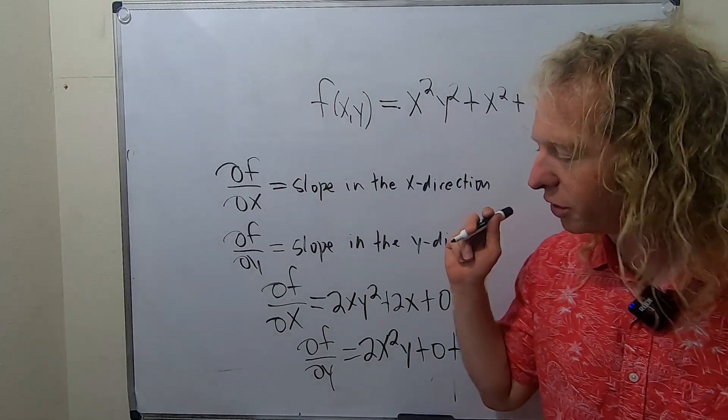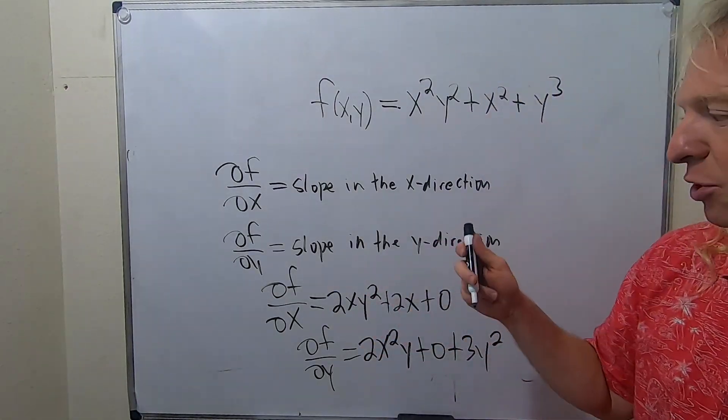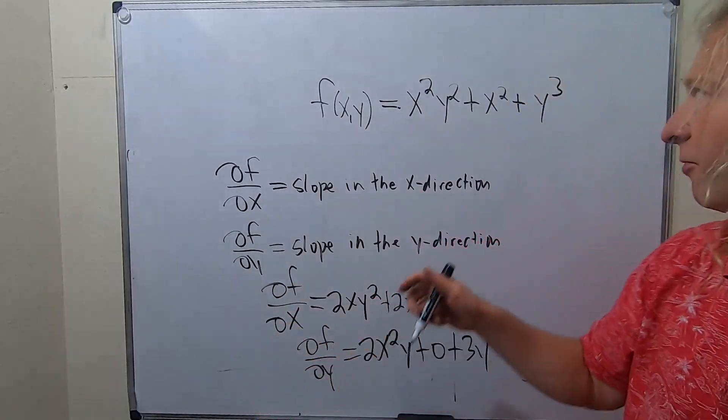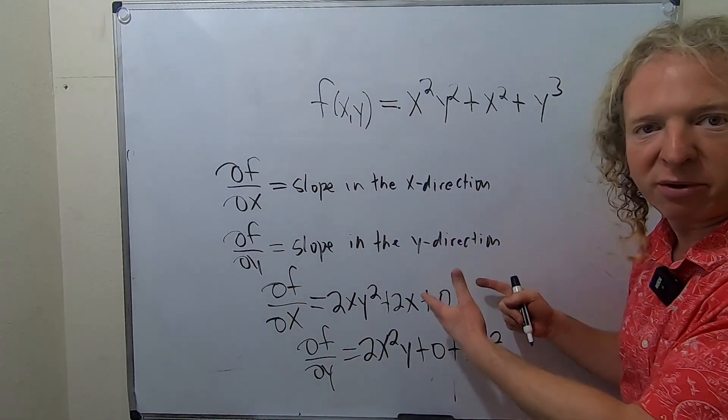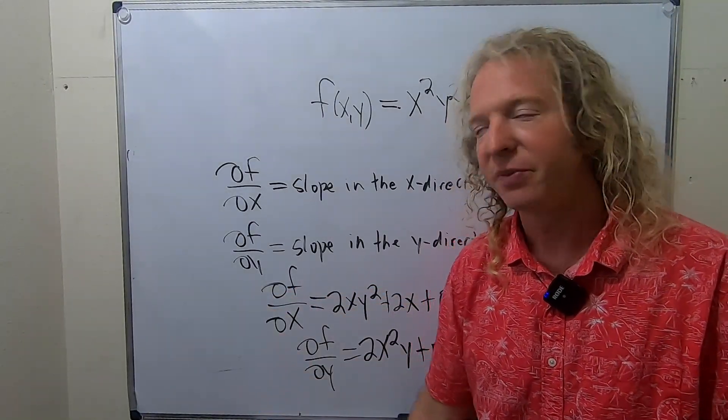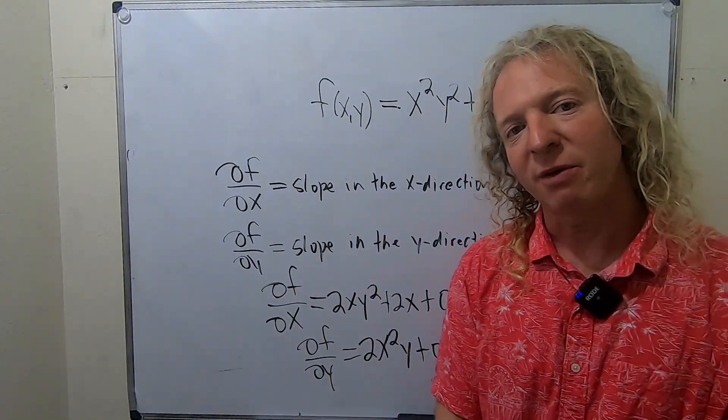So when you're taking partial derivatives with respect to any variable, you treat all of the other variables as constants. If we had a z here, its derivative would have been 0 in both cases as well because we never computed the partial with respect to z. I hope this video has been helpful. Take care.